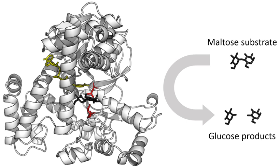Enzymes can accelerate reactions in several ways, all of which lower the activation energy by stabilizing the transition state. These include: creating an environment with a charge distribution complementary to that of the transition state; by providing an alternative reaction pathway; temporarily reacting with the substrate, forming a covalent intermediate to provide a lower energy transition state; by destabilizing the substrate ground state, distorting bound substrates into their transition state form; and by orienting the substrates into a productive arrangement to reduce the reaction entropy change. Enzymes may use several of these mechanisms simultaneously. For example, proteases such as trypsin perform covalent catalysis using a catalytic triad and stabilize charge build-up on the transition states using an oxyanion hole.